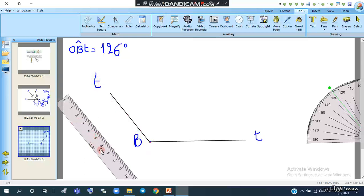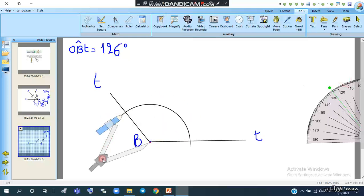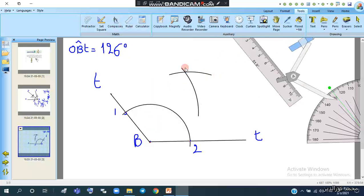We have to draw the bisector of the angle using the compass. Put the needle or dry point on the vertex, open to a certain width and draw the arc. Now we have two intersection points, point 1 and point 2. Put the needle on point 1 and draw the arc. With the same opening, put it on point 2 and draw the arc. These two arcs intersect at this point. Connect from the vertex to the point of intersection of two arcs.